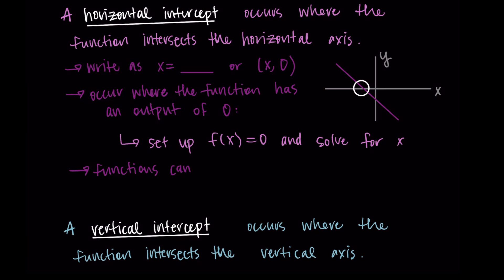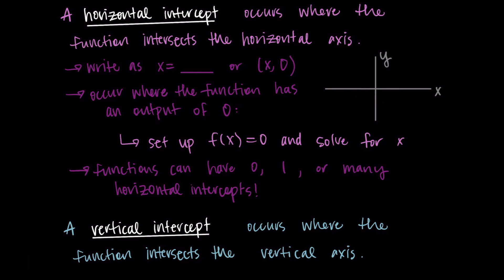A function could have zero, one, or many horizontal intercepts. This line has one horizontal intercept, but the line could also be horizontal, and a horizontal line would have zero horizontal intercepts — it doesn't intersect at all. Or if we had a different type of function, it could intersect the x-axis multiple times. So functions can have multiple horizontal intercepts, none at all, or just one.